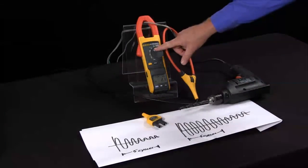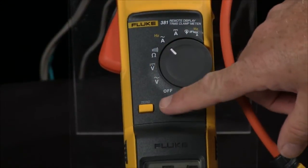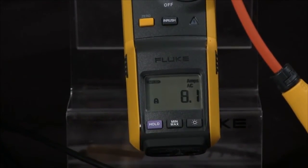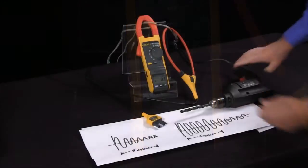what we first do is we turn it to amps and then we press the inrush key. The meter will wait for you to start the motor and we'll be able to capture the inrush current.